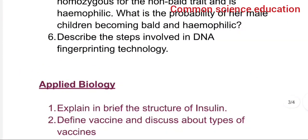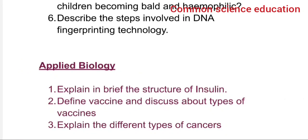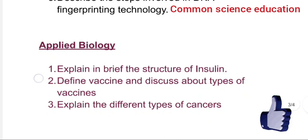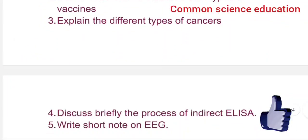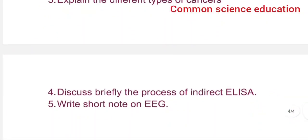For applied biology, explain and describe the structure of insulin. Define vaccine and discuss types of vaccines. Explain the different types of cancers. Discuss briefly the process of indirect ELISA. Write a short note on EEG. These are all the second year zoology important questions.